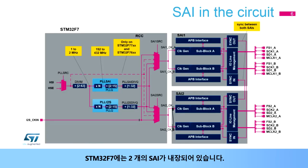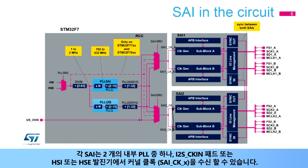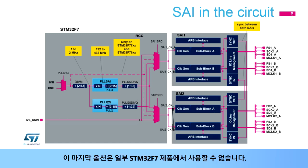The STM32F7 embeds two SAIs. Each SAI can receive a kernel clock, or SAI-CKX, from one of the two internal PLLs, from the I2S-CKIN pad, or from the HSI or HSE oscillators. This last option is not available on all STM32F7 products.